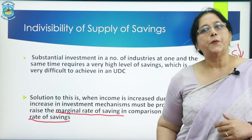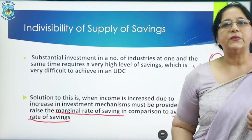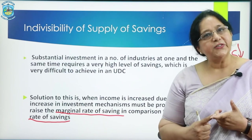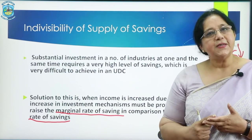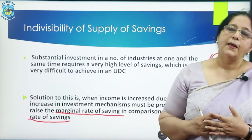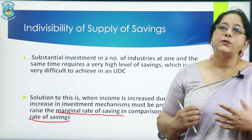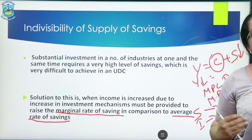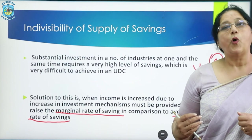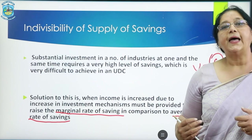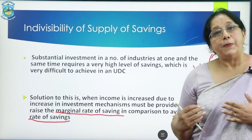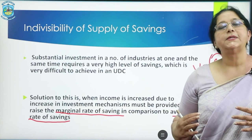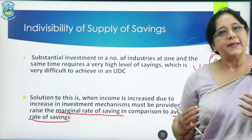In total, we've talked about three kinds of indivisibilities: indivisibility of production function, indivisibility of savings, and indivisibility of demand. Rosenstein-Rodan says that because of these indivisibilities, it is very important that investment takes place in a balanced manner and the economy grows in a balanced manner.